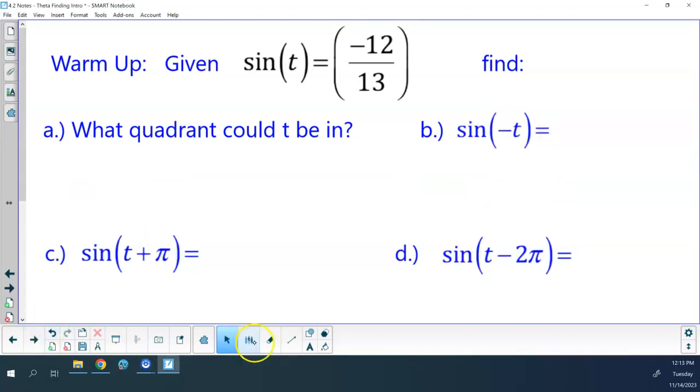So, in which quadrants is sine negative? Three and four. So this angle could be in quadrant three, or it could be in quadrant four. Because we can't base that off of one value, we need to base it off of two values. We only have one, so therefore it's in three or four.